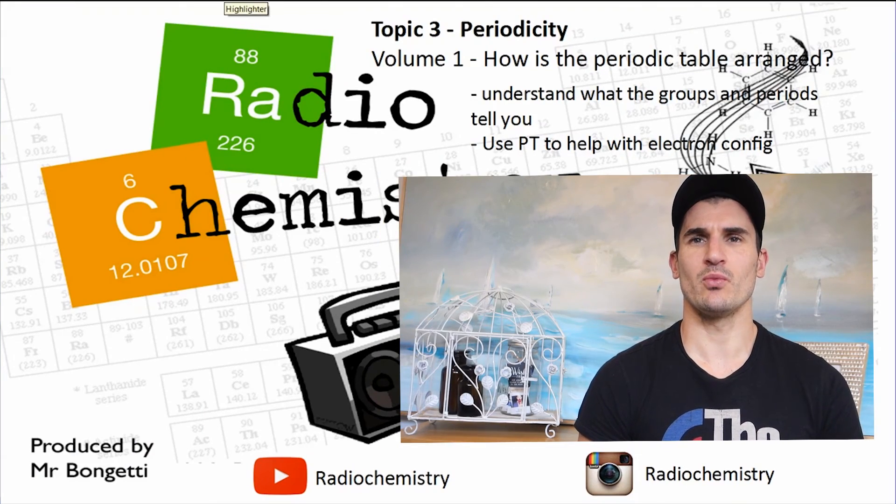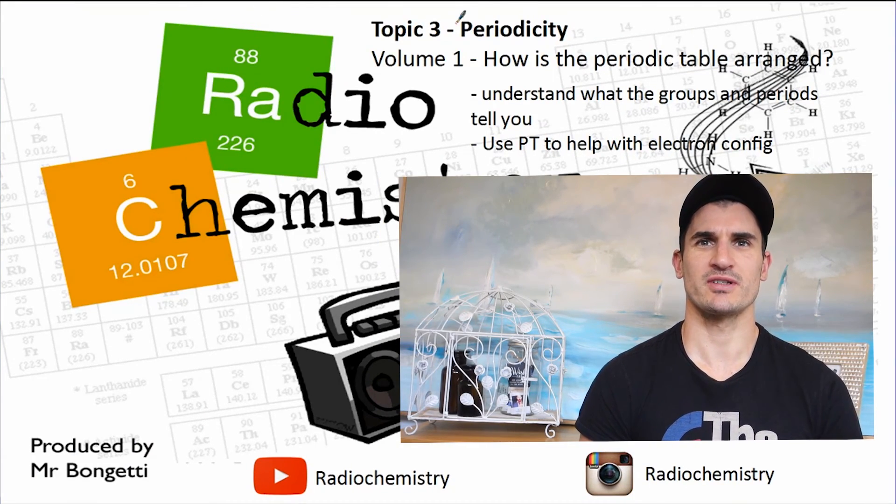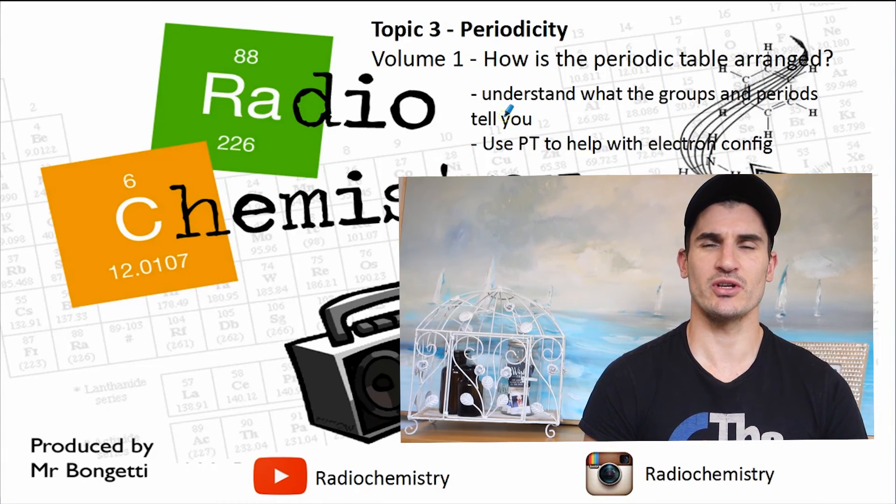Okay, some top tips for volume 1: What is the periodic table, or how is the periodic table arranged? Make sure you understand what the groups and periods tell you, and use the periodic table when you need help writing an electron configuration.